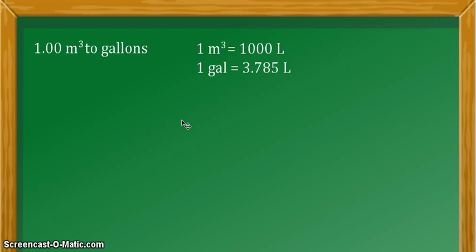The equivalent statements that we need to solve this problem are: 1 cubic meter equals 1,000 liters, and 1 gallon equals 3.785 liters.